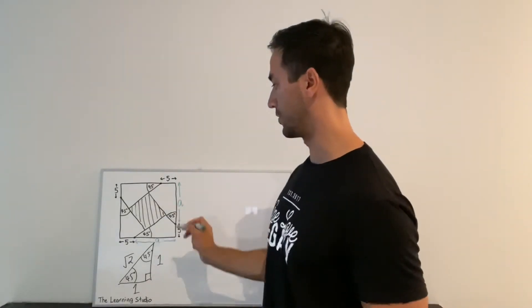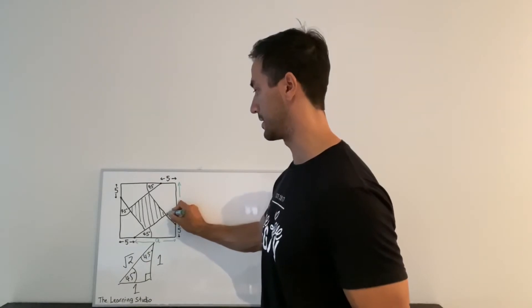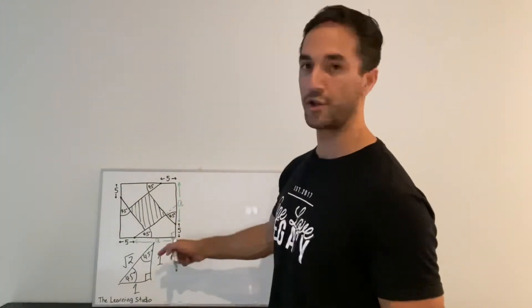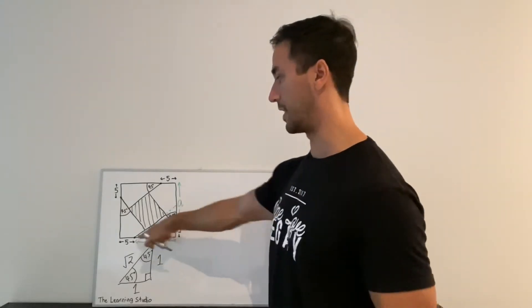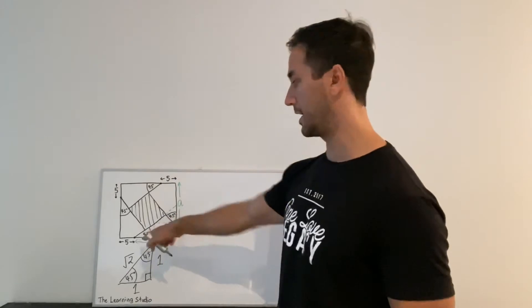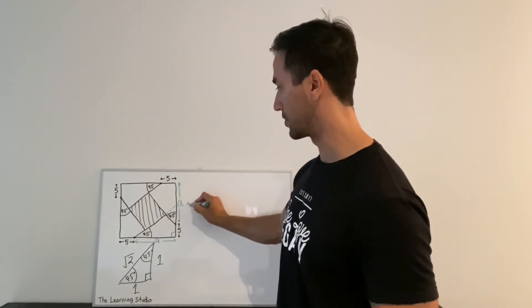The next thing I want to do is I want to extend this line out until it hits the edge of the big square so now we get our isosceles right angle triangle here. And since we've called this side length a, this must also be a.